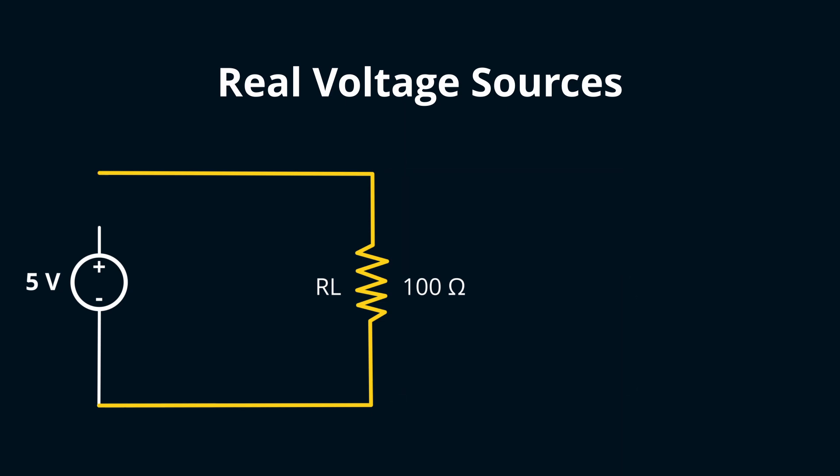However, when we introduce a real voltage source with an internal resistance, let's say 3 ohms, what happens? This configuration mimics a voltage divider. The exact voltage across our load resistor? We can find it using this equation.